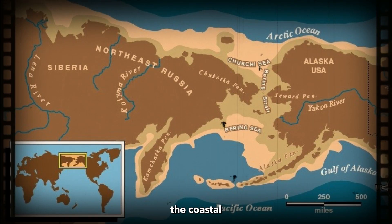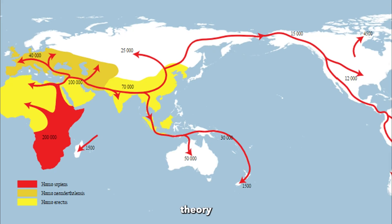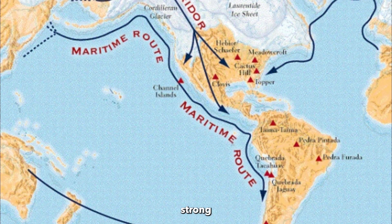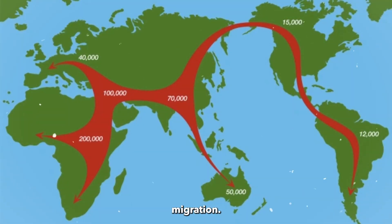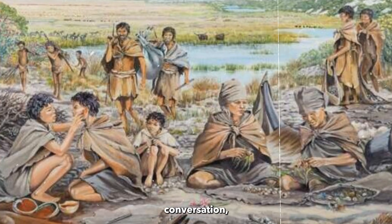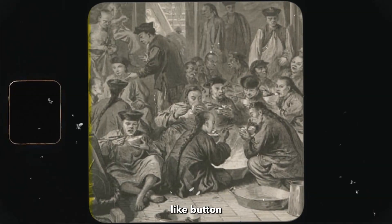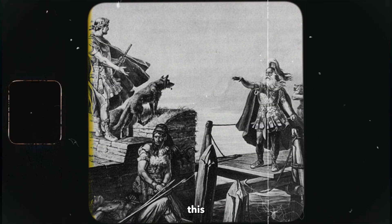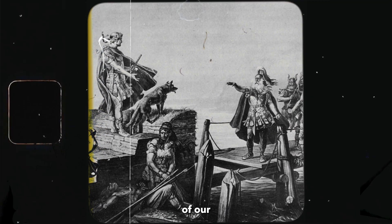To summarize our journey today: the coastal migration theory challenges the traditional land bridge narrative, the pre-Clovis theory expands our understanding of early migrations, and the Solutrean hypothesis stirs controversy but lacks strong supporting evidence. As we continue to explore the mysteries of human migration, we encourage you to join the conversation. Share your thoughts and ideas in the comments below, and don't forget to hit that like button and subscribe to our channel for more fascinating content. Thank you for watching this episode of Legacy of the Unknown. We'll see you next time as we delve deeper into the mysteries of our shared history.